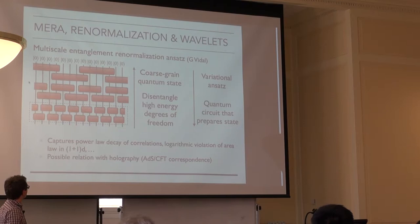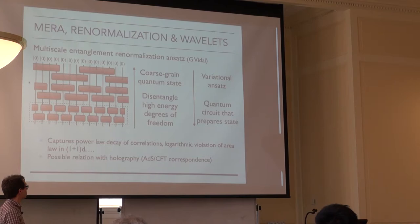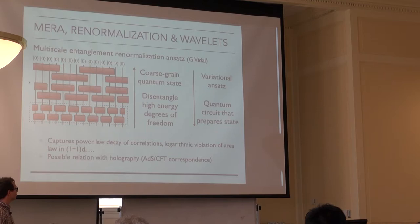It's used as a variational ansatz for how a quantum state of a critical system should look. You try to find unitaries that actually prepare your state, creating a quantum circuit that prepares, for example, the ground state of a CFT or a lattice model whose low-energy description is a CFT. This ansatz captures the phenomenology expected of critical systems: power-law decay of correlations, logarithmic violations of the area law in one dimension, and there are conjectured relations between MERA and holography — Brian was among the first to point out possible connections there.